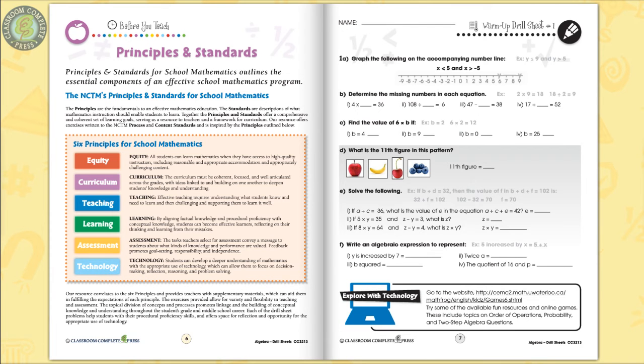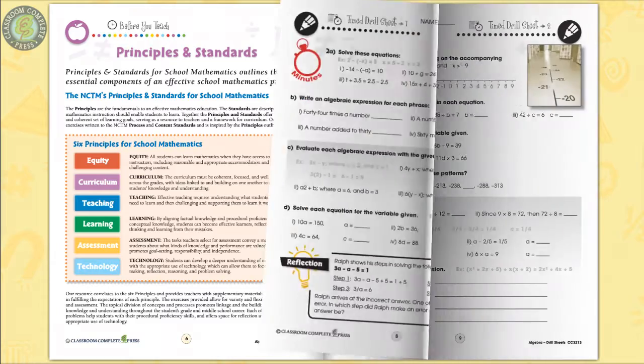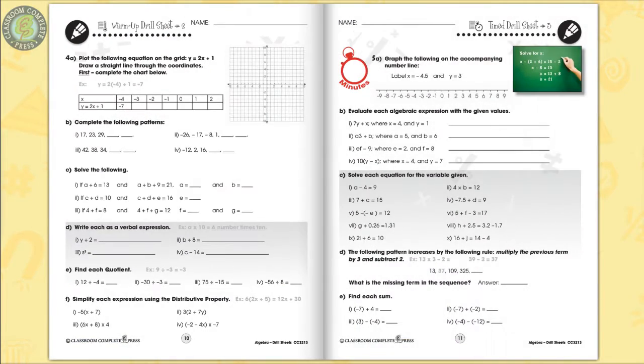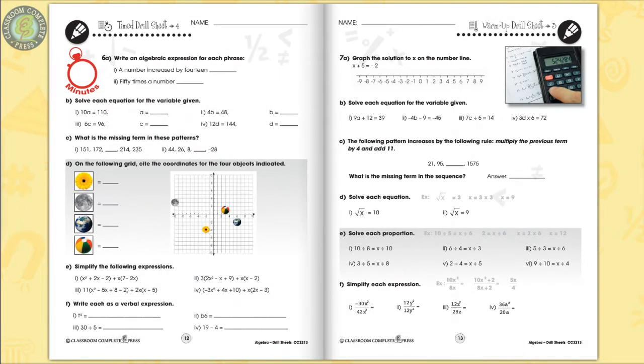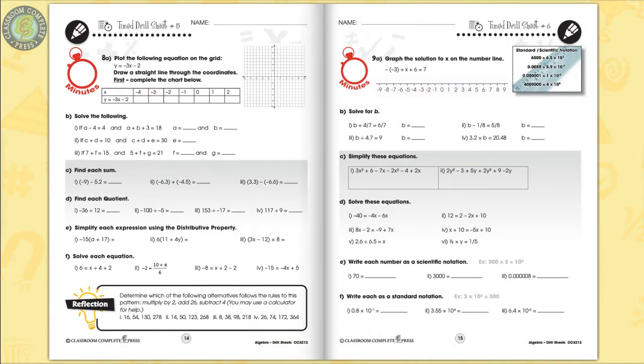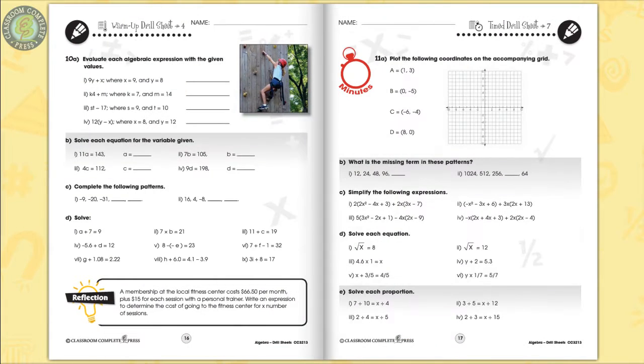Test student comprehension with warm-up and timed drill activities. Find the missing numbers in the equations. Plot an equation on a grid. Graph the solution to X on a number line. Write numbers as a scientific notation. Substitute a number for X to find the value of an expression.